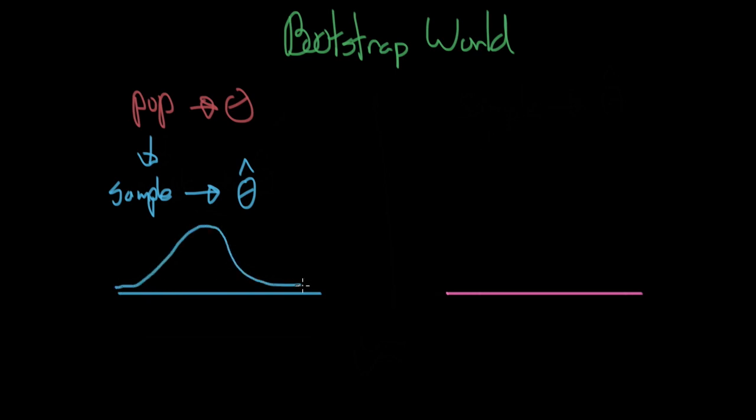We can go ahead and take this one step further and actually construct a sampling distribution from our sample. We can use the sampling distribution to create a confidence interval as we saw before. And this is kind of like the full step.